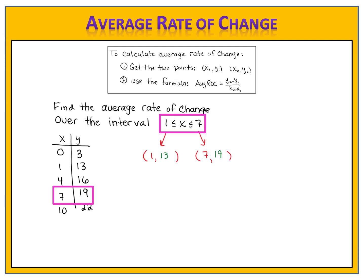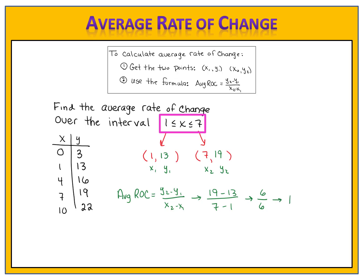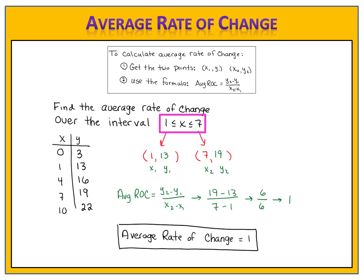We now have the two points and we're ready to use the formula. We label the points x1, y1 and x2, y2. We write the formula: y2 minus y1 divided by x2 minus x1. We do the substitution and perform the computations — 6 over 6. Don't forget to reduce your fraction: 6 over 6 reduces to simply 1. The average rate of change when x goes from 1 to 7 is 1.